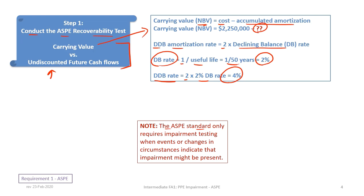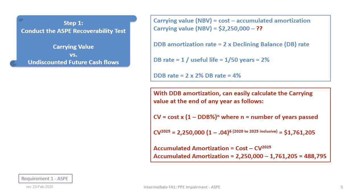Note that under ASPE, impairment testing is only required when certain changes or events suggest impairment may be present — it does not need to be done annually. Also, under ASPE the correct terminology is 'amortization,' while under IFRS the correct term is 'depreciation' — these may be used interchangeably throughout the tutorial.